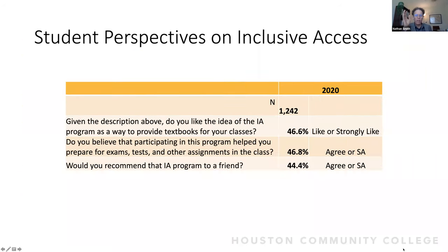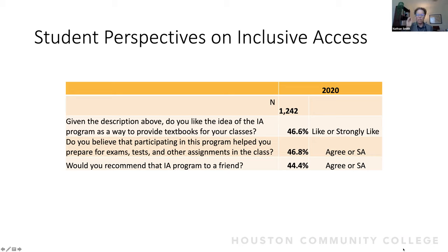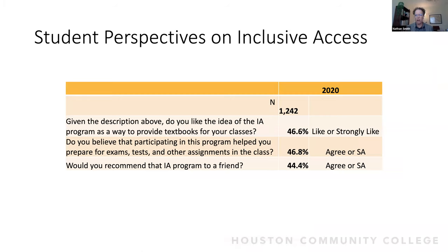Faculty think at around 70% that inclusive access is helping student success. Students say only 46%. Would you recommend the inclusive access program? Less than 50% agree or strongly agree they would recommend it to a friend. So when we dig a little bit deeper, we can see there are real questions about the program and that student opinions are varied. We have a couple of students here who can actually share their opinions. I'll introduce our students.